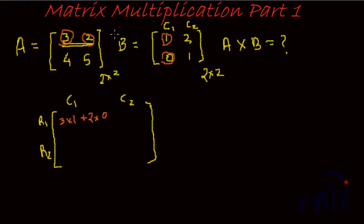Similarly, column 2, row 1, this element would be 3 into 2, which is 6, plus 2 into 1, which is 2.